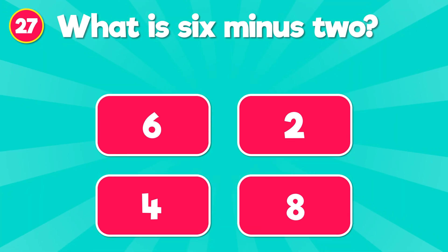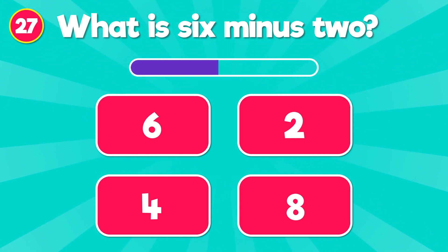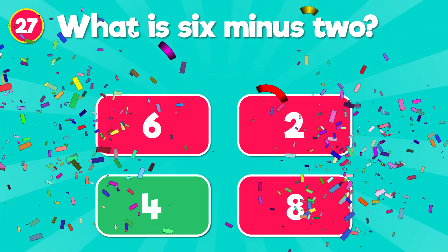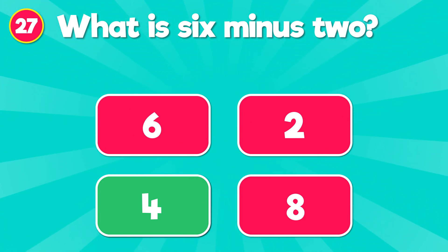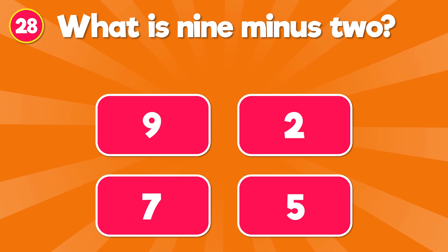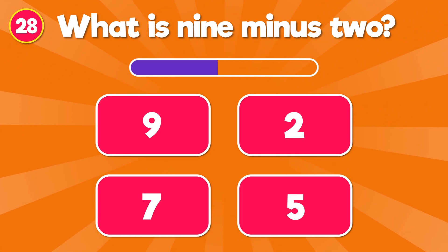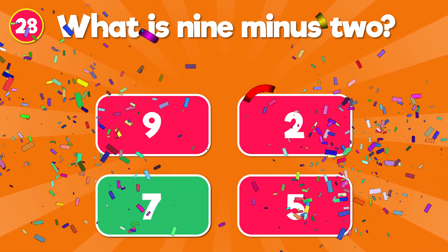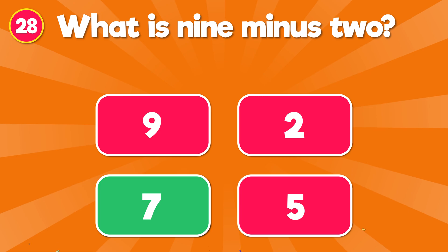What is 6 minus 2? The correct answer is 4. 6 minus 2 is 4. What is 9 minus 2? The correct answer is 7. 9 minus 2 is 7.